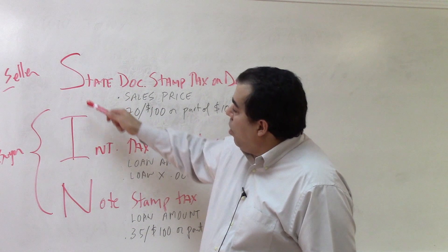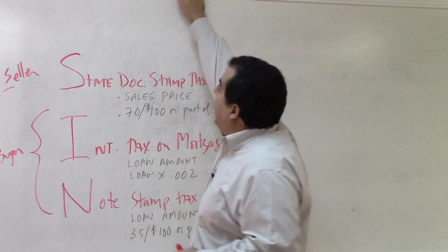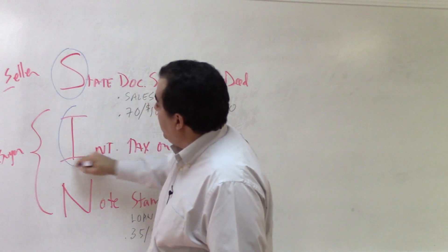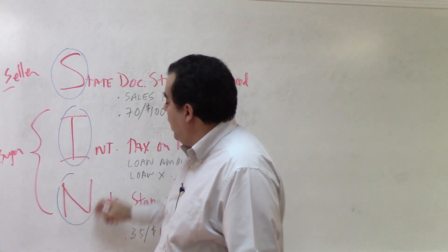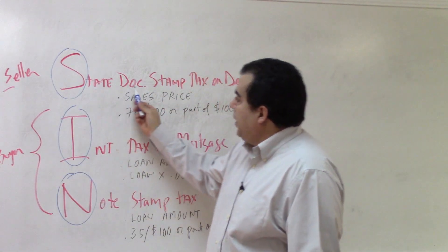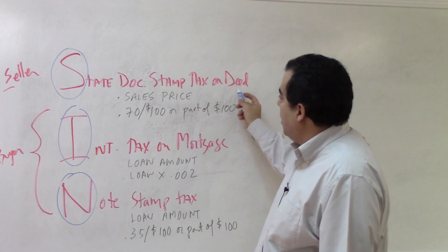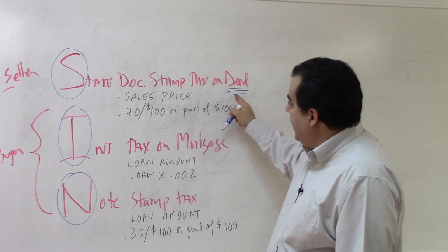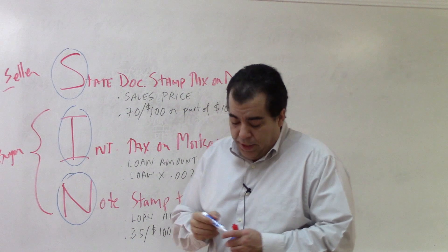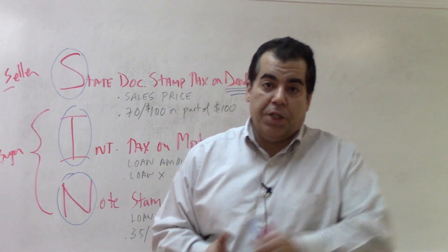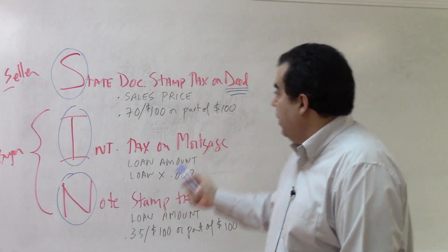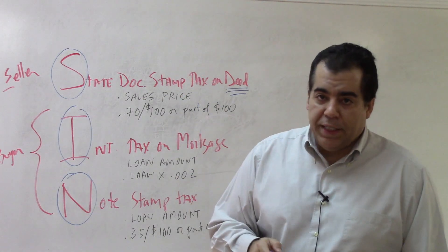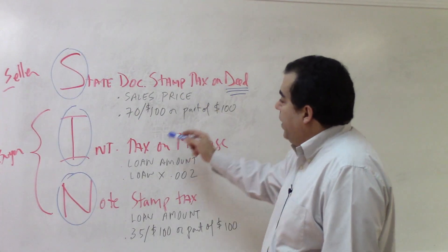The memory aid is: taxes are a sin. S-I-N. You've got the state documentary stamp tax on the deed. The deed transfers the entire property, so when calculating the tax on the deed, we use the sales price.